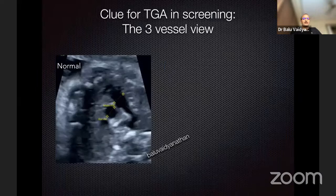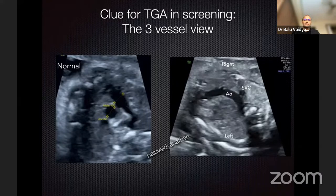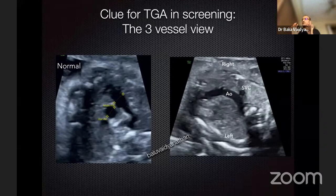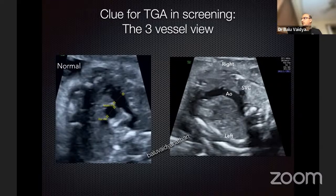Three clues. The most important: normally you find three vessels in the three vessel view, but in this lesion you find only two vessels — only the aorta and the SVC. The reason is that the PA has already come as a posterior vessel and is not visualized in the three vessel view. This particular view — seeing only two vessels — is actually the view you get in TGA during screening. Whenever you get this picture, one of the important conditions you should suspect is TGA, and you should go back to the outflow and other views to confirm how the great arteries are related.